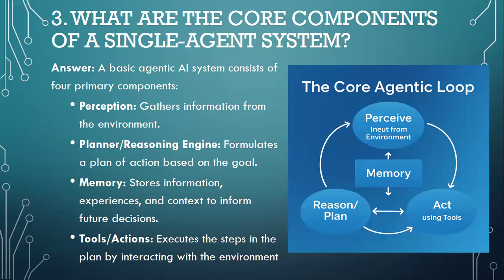What are the core components of the single agent system? A basic agentic AI system consists of four primary components: Perception — gather information from the environment; Planner or reasoning engine — formulate a plan of action based on goal; Memory — store information, experiences and context to inform future decisions; Tools or actions — execute the steps in the plan by interacting with the environment.